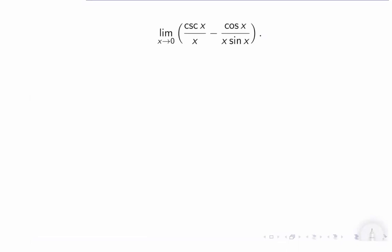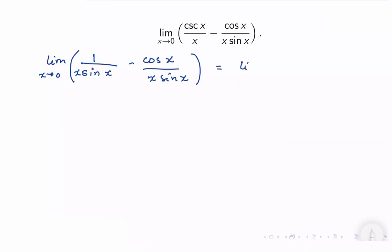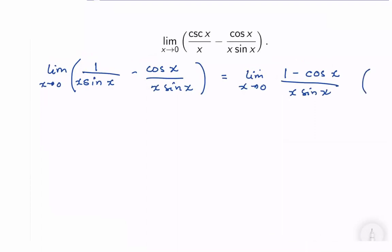Let us evaluate the limit of cosecant x minus cosine x over x·sin x as x approaches 0. We can write cosecant x as 1 over sin x, giving (1 minus cosine x) over x·sin x. If we substitute, the limit of the numerator is 1 minus cosine 0, which is 0, and the denominator is also 0.